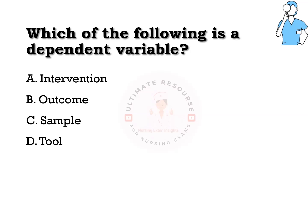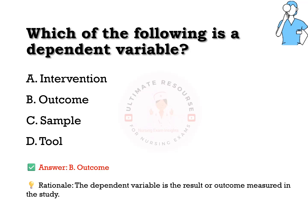Which of the following is a dependent variable? Options are a) intervention, b) outcome, c) sample, d) tool. The answer is b) outcome. The dependent variable is the result or outcome measured in the study.